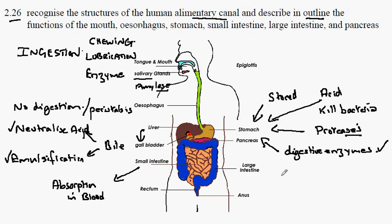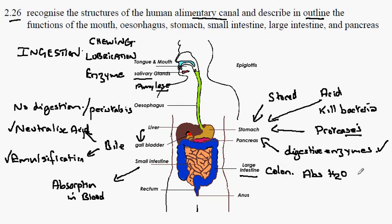Food passes from the small intestine into this larger diameter tube known as the large intestine or the colon, and this is where we absorb water into our bloodstream.